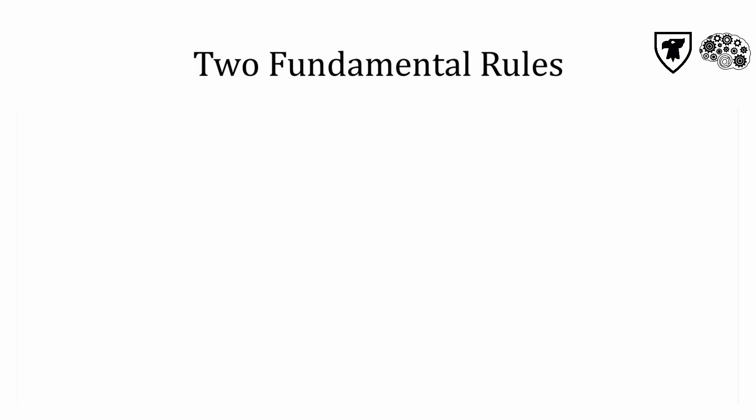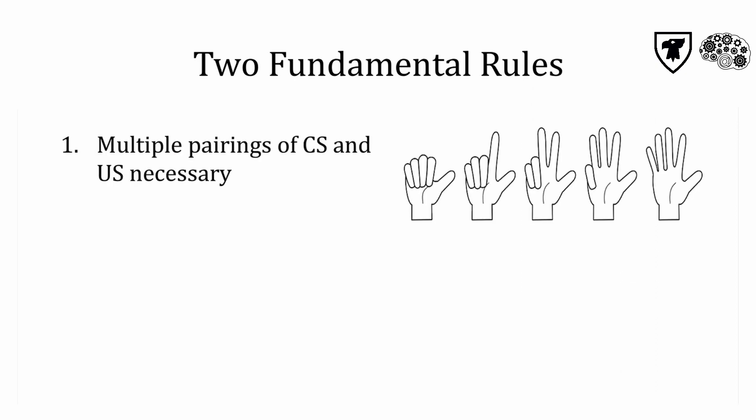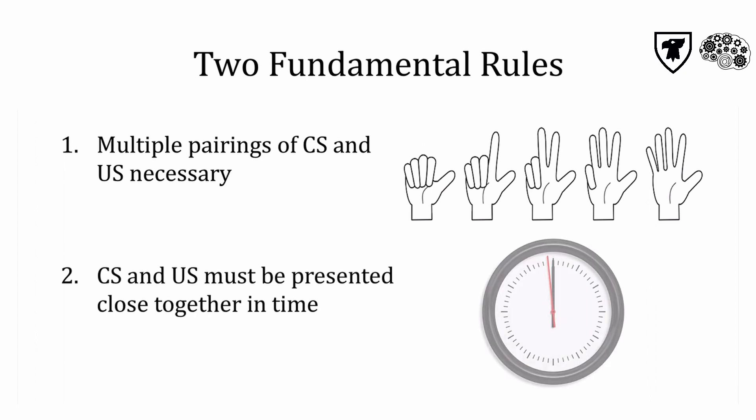Through many careful experiments, Pavlov and his research group worked out two fundamental rules of classical conditioning. First, multiple pairings of the US, or natural stimulus, and the CS, or neutral stimulus, are necessary for the CS to take on meaning. Second, the CS and US must be presented close together in time, and it works best when the CS occurs just before the US, so it can act as a predictor.